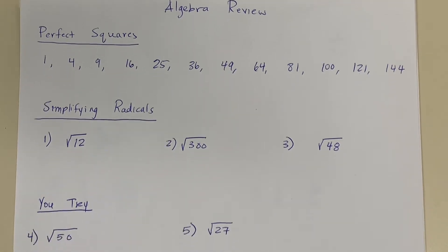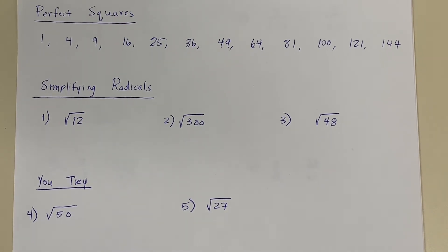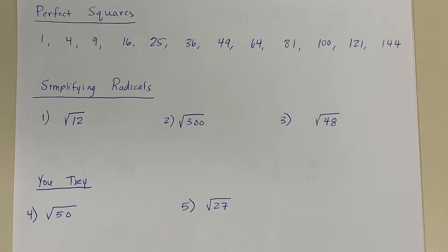We're going to have to simplify radicals so that we can get exact answers. For example, in problem number 1, we have the square root of 12. If you take the square root of 12 on your calculator, you're going to get a decimal that does not end and does not repeat. So if we were to give an answer, we would have to round that answer to the nearest tenths or hundredths. Whenever we round a number or decimal, it's an approximate answer — really close to the right answer, but not exact. If we want to give an exact answer, then we always leave it in what we call simplest radical form. Most of the answers in 8.3, we're going to ask you to give your answer in simplest radical form. So we're going to take a little bit of time and review simplifying radicals.